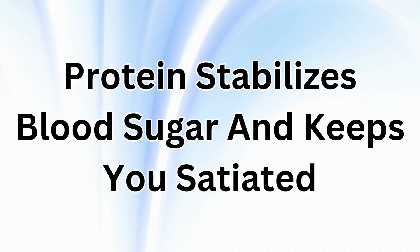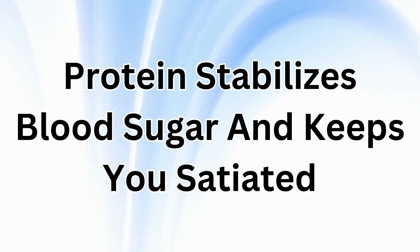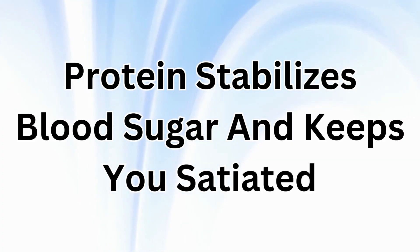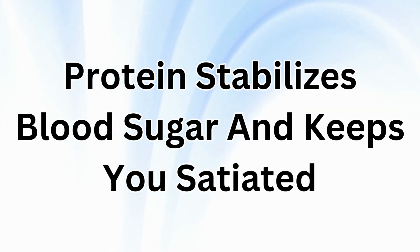Protein is another great choice for diabetics because it helps stabilize blood sugar and keeps you satiated. This reduces cravings for sweets and reduces the urge to snack. Some great protein choices for diabetics are eggs, fish, Greek yogurt, cottage cheese, beef, chicken, and turkey.